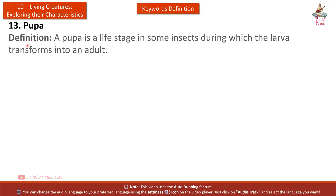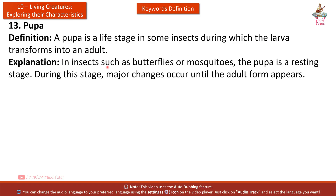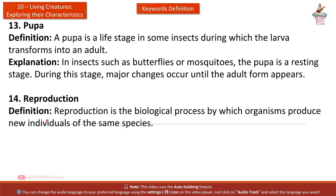Thirteenth: Pupa. Definition: A pupa is a life stage in some insects during which the larva transforms into an adult. Explanation: In insects such as butterflies or mosquitoes, the pupa is a resting stage. During this stage, major changes occur until the adult form appears.